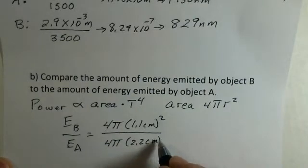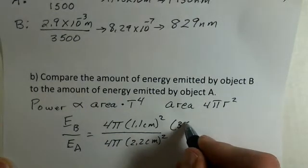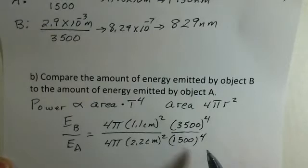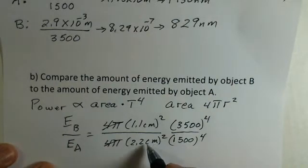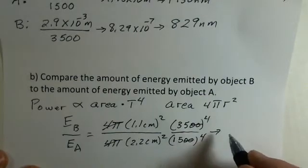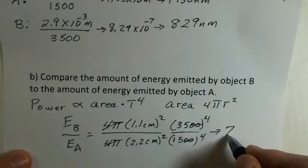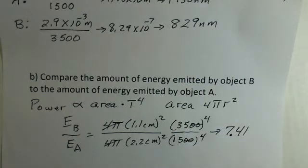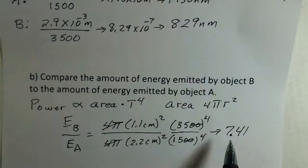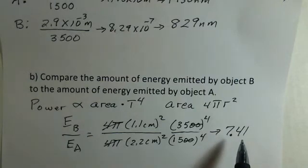What can cancel? Now the 4πs. I don't need to convert these to meters; they're both centimeters, that unit will cancel. I just save some button pushing. I can cancel those zeros. And you should do this on your own calculator. I came up with 7.41. Even though object B is smaller, it has a much higher temperature, and the temperature is the most important factor. It's raised to the fourth power, so we're going to get 7.41 times more energy emitted by object B than object A.